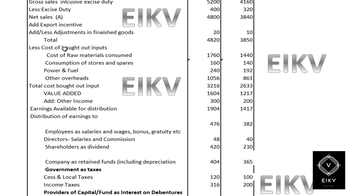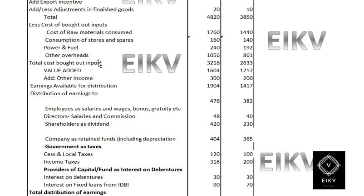From this total, we deduct the cost of bought-out. The cost of bought-out includes cost of raw material consumed, cost of stores and spares, power and fuel, and other overheads. The first three expenses are directly given in the question. Other overheads are the sum of some additional expenses, which gives a total of 1056 and 861, as explained below.